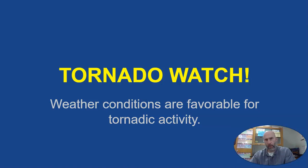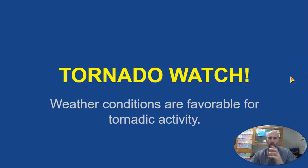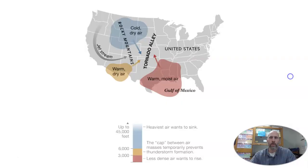The first thing you have to know is the difference between a tornado watch and a tornado warning. A tornado watch is when the National Weather Service determines that weather conditions are favorable for tornadic activity. There are lots of ingredients that go into making a tornado, and if all of those conditions look like they're possibly going to happen, the National Weather Service will issue a tornado watch.